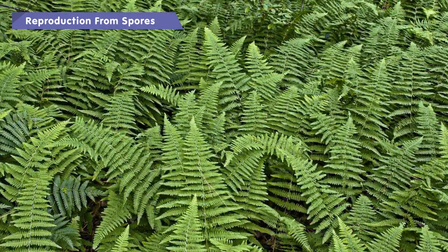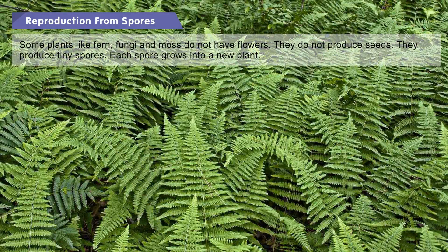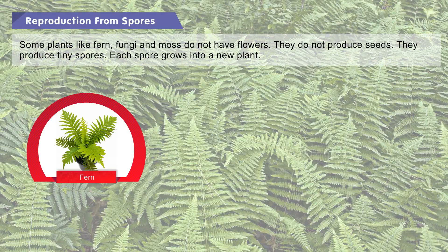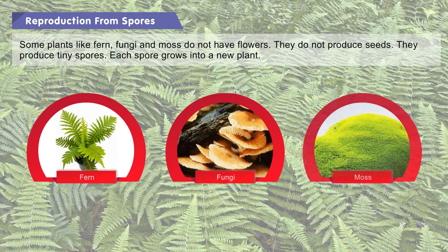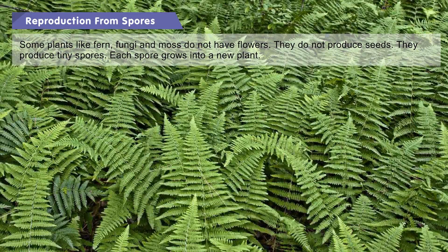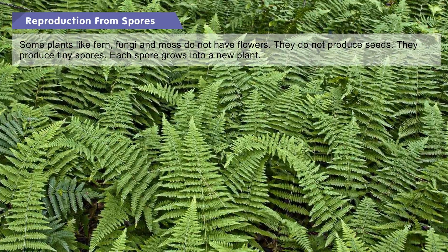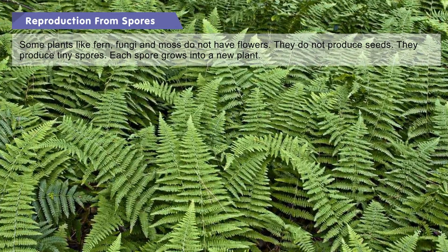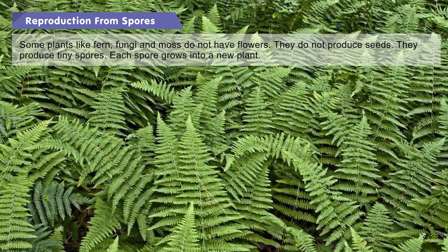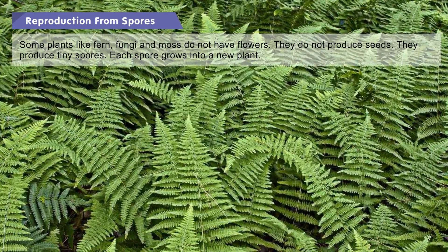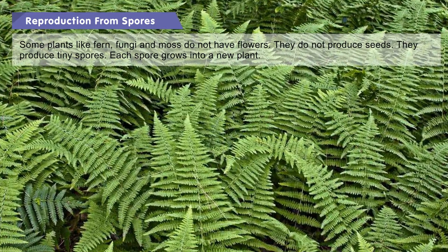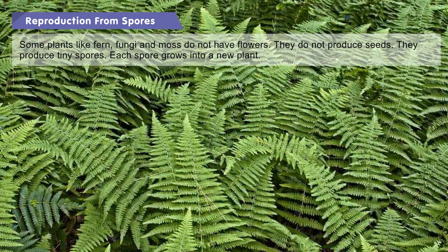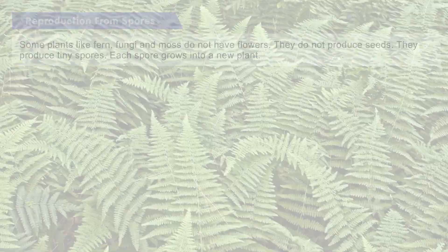Reproduction from spores: Some plants like fern, fungi, and moss do not have flowers and do not produce seeds. They produce tiny spores, and each spore grows into a new plant.